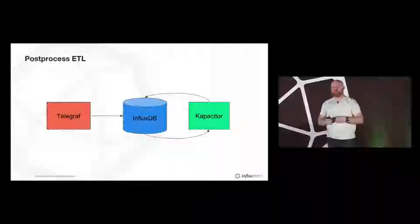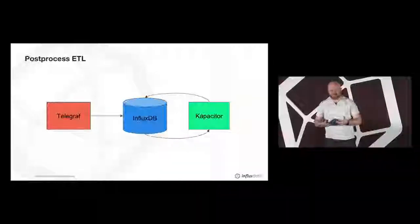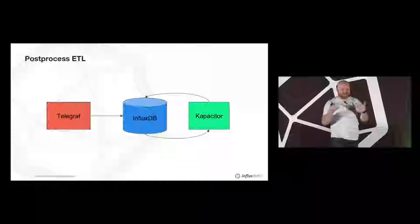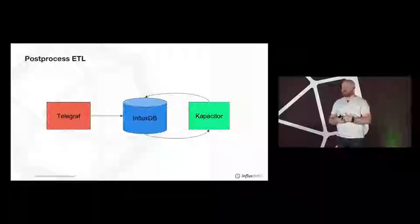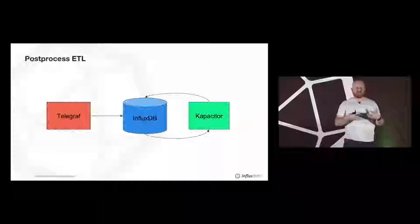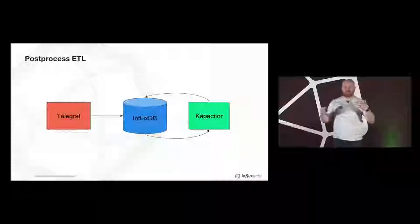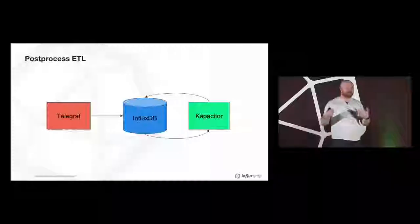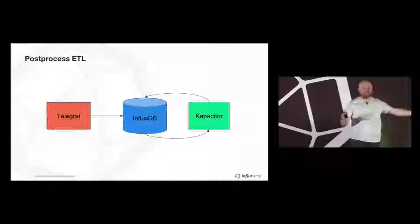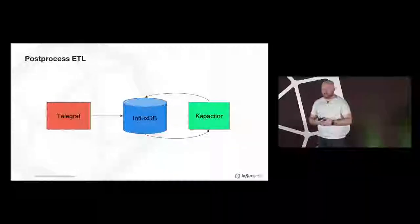Kapacitor has a nice feature where if you define a task, by default it runs for current time, but you can tell it to run for historical time. Say you set up a downsampling task and then realize a system was down and you missed data. You reload all your data into InfluxDB, but your computed aggregates are out of date. You can simply tell Kapacitor to rerun the task for that window of time, and it will fix and update all your aggregates after the fact — which is really powerful.